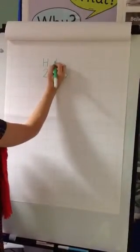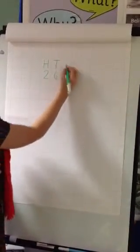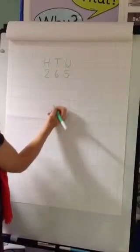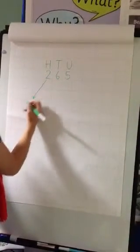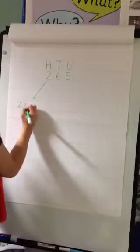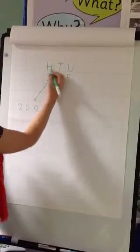above the 6 it will be tens, and above the 5 it will be units. So the number 2 here is the same value as 200, as it's in the hundreds column.